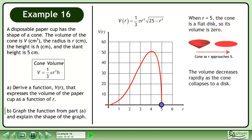When r equals 5, the cone is a flat disk so its volume is 0. The volume decreases rapidly as the cone collapses to a disk.